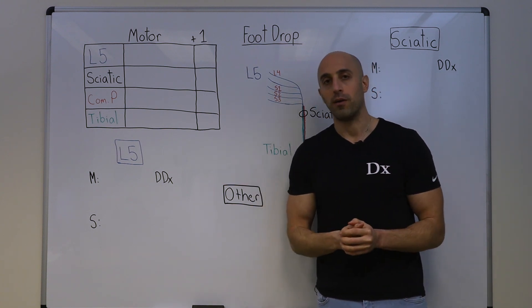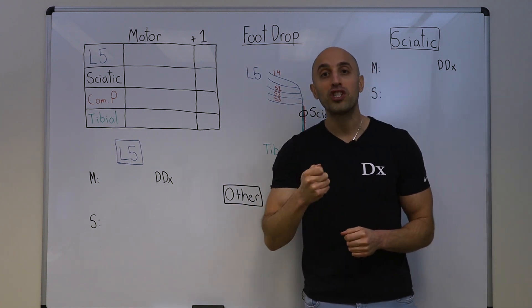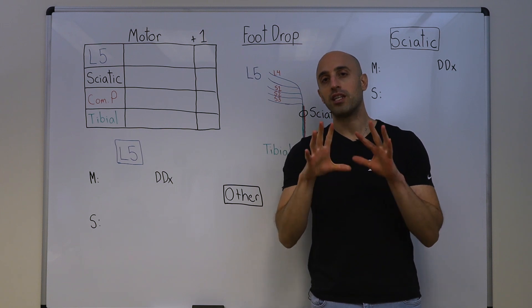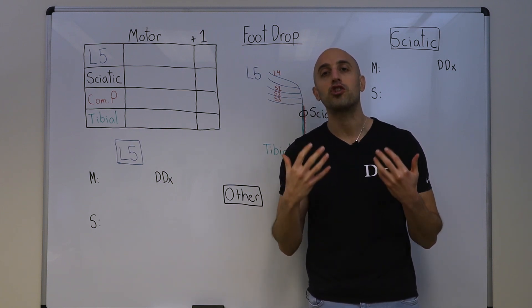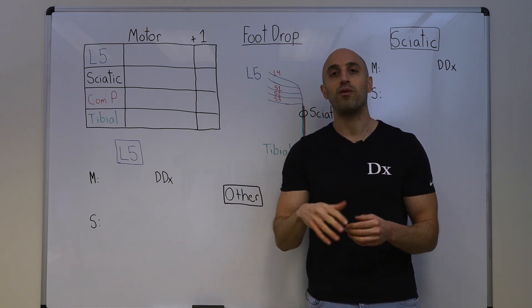Why does foot drop occur? It occurs due to dorsiflexion weakness. I'm going to change the angle of the camera so I can show you the various movements of the foot. In order to localize a site of pathology that leads to foot drop, we first need to learn the four possible directions the foot moves.